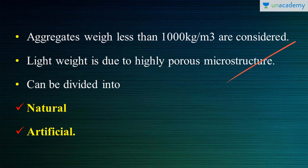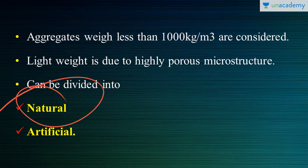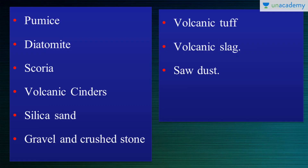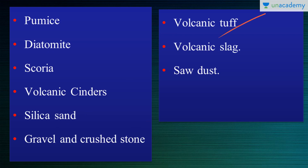So today's lesson focuses on natural aggregates of lightweight concrete. Let's see some of the important natural aggregates used in the industry today. The first one is Pumice, then Diatomite, Scoria, Volcanic Cinders, Silica Sand, Gravel and Crushed Stone, Volcanic Tuff, Volcanic Slag, and Sawdust. Let's see each one by one.